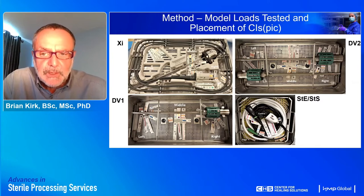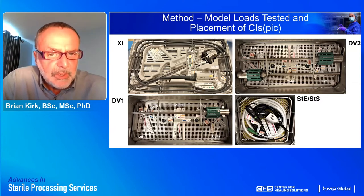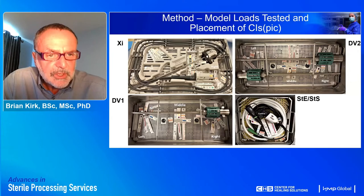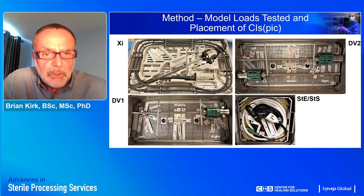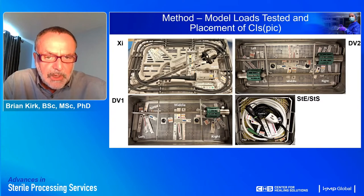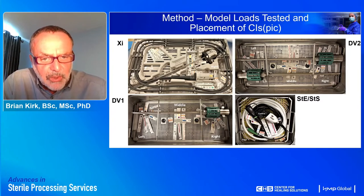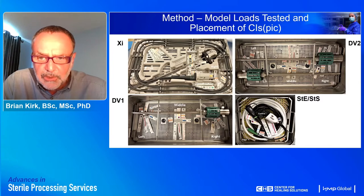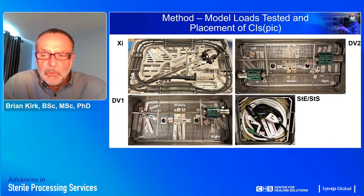For loads ST and STS, CIs were placed either at center or edge. The indicators were positioned in the left, middle, or right-hand side of the individual load items; for ST and STS they were either placed in the center of the model load or arranged around the outside, supported within the porcupine mat visible in the corners of the sterilization container.